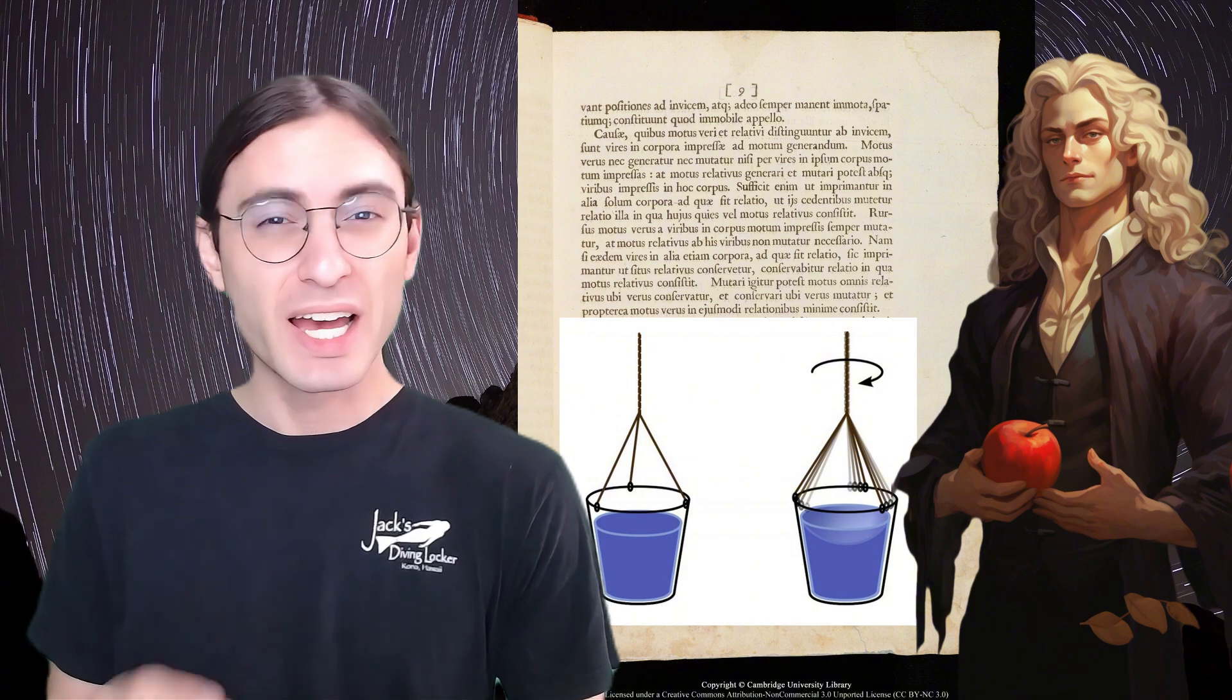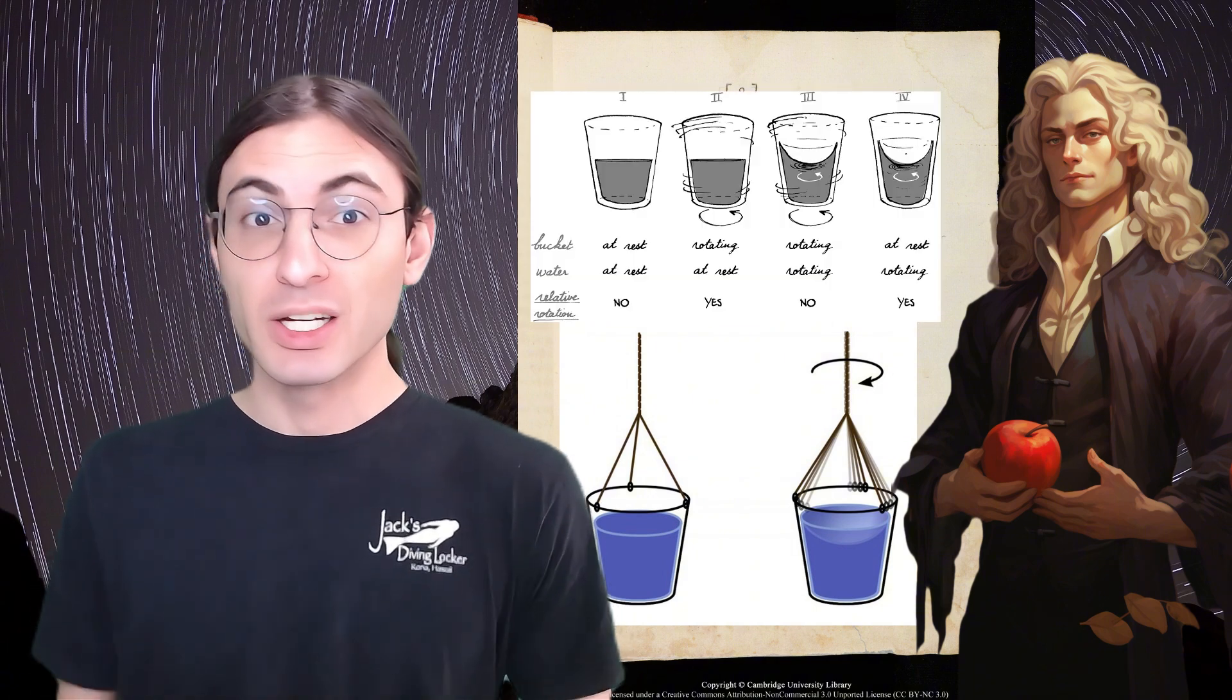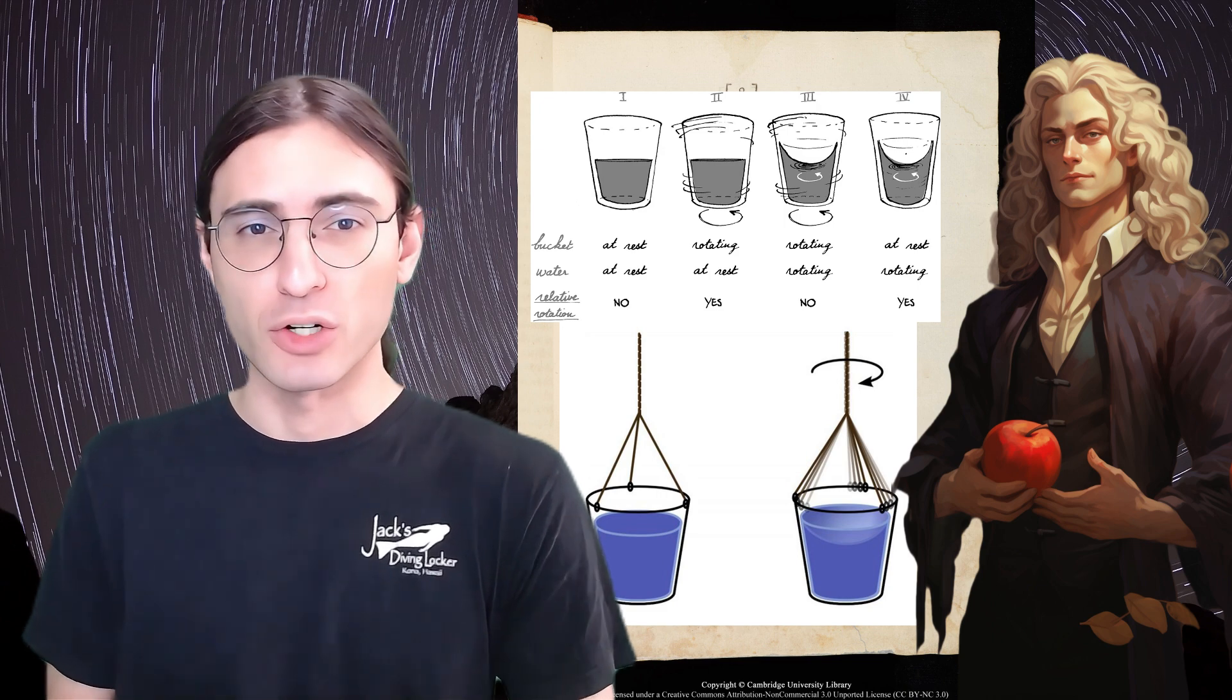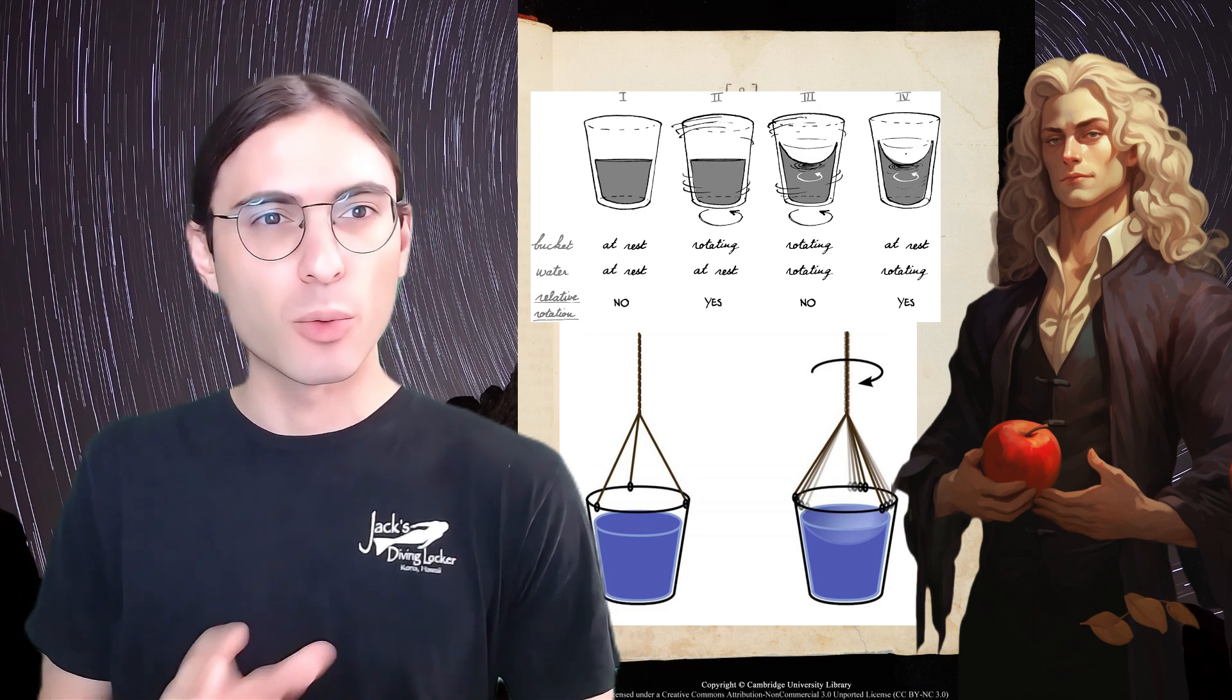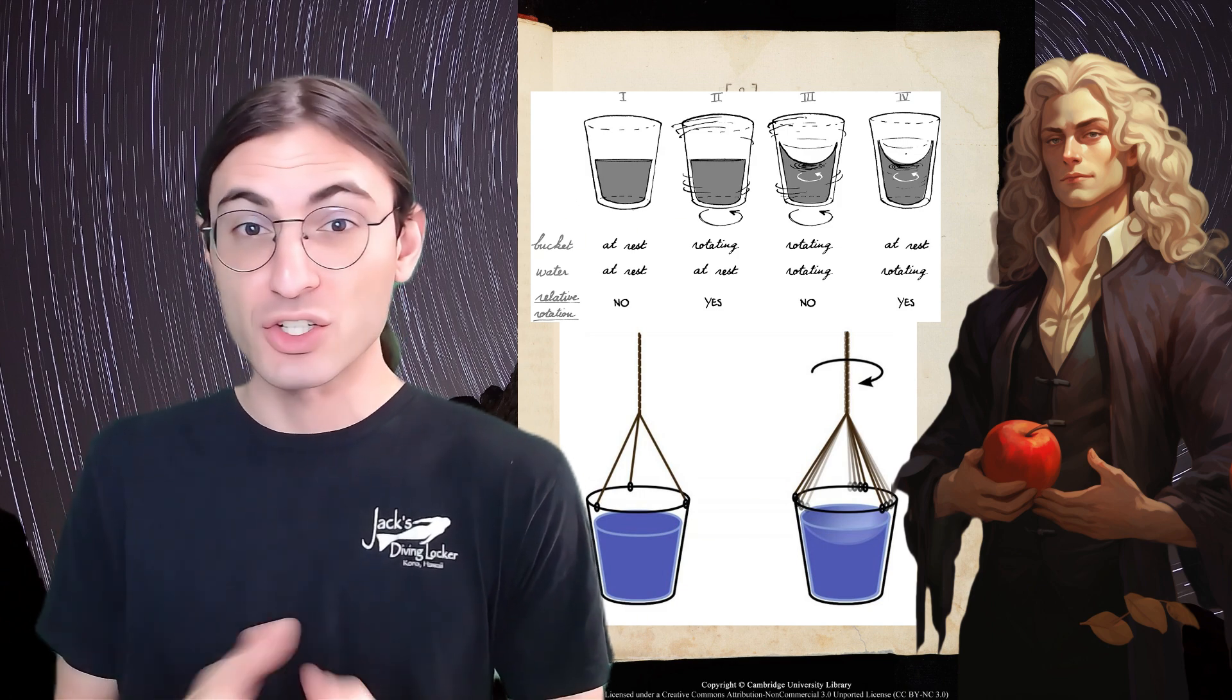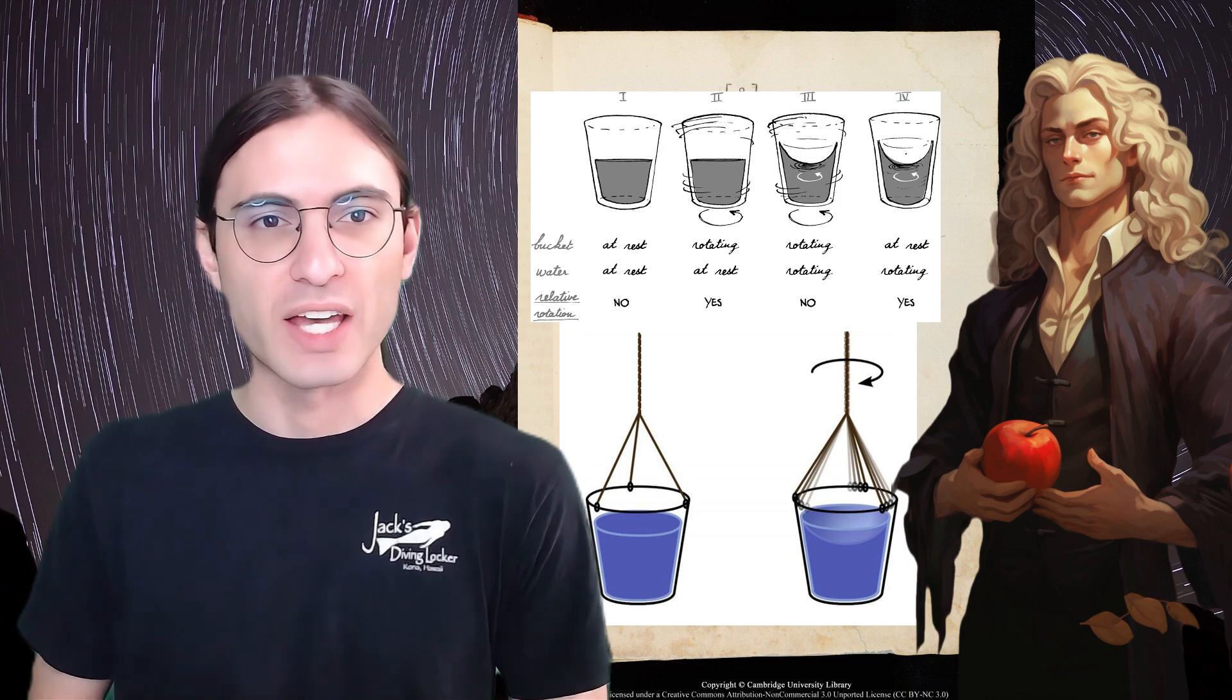In 1687, Isaac Newton proposed the following thought experiment. Imagine a bucket filled with water, hanging from a tightly twisted cord. Upon release, the bucket spins, but the water remains stationary as viewed by the watcher. But if you wait long enough, the water acquires the motion of the bucket and consequently starts to deform, creating a depression in the center and raised edges near the edge of the bucket.